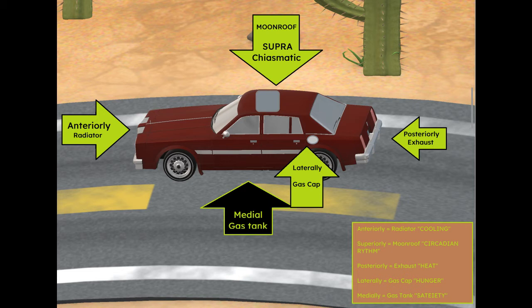Now if we go to the medial — I drew this arrow in black because you can't really see it — but underneath the car is a gas tank. So after you put the fuel in, it sits in a reservoir which is the gas tank, and once that gas tank is full you can no longer put fuel in. So the medial nucleus is involved in satiety — it's when you're no longer hungry.